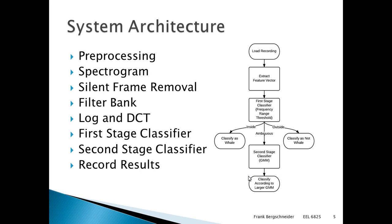This feature vector is then given to the first stage classifier, where it's classified as either a whale if it's inside the frequency range threshold, or not a whale if it's outside, or ambiguous if there's not a clear decision made. The ambiguous feature vectors are given to the second stage, which is the Gaussian mixture model, and the larger of the two models is selected and the results are recorded.